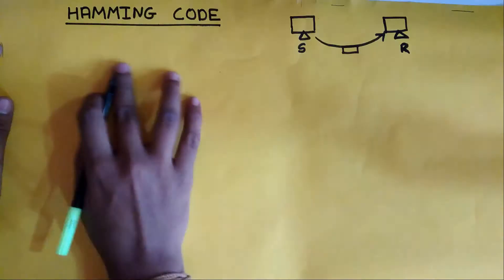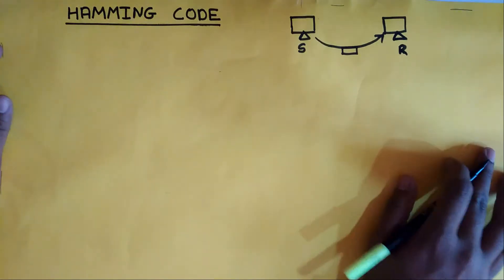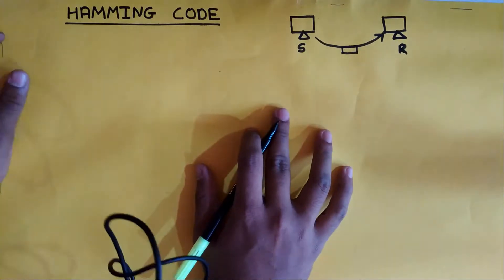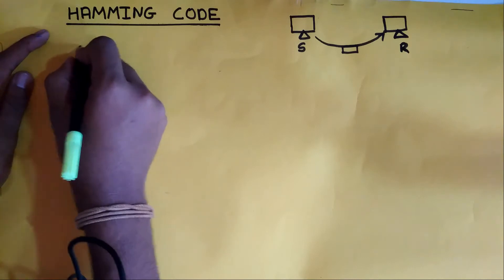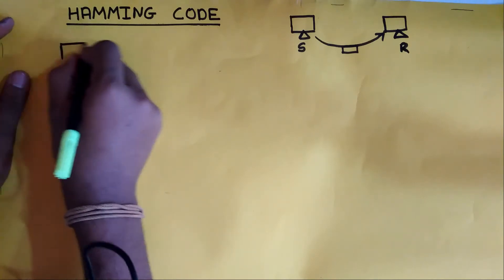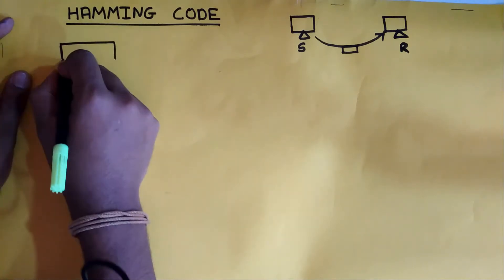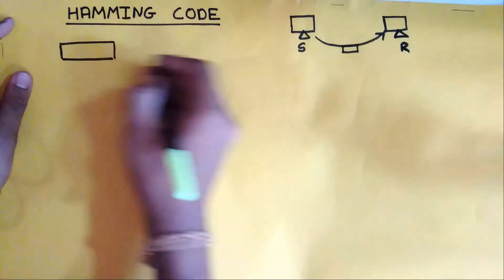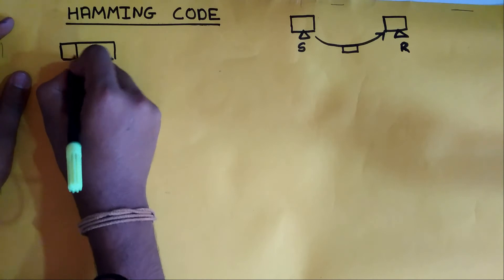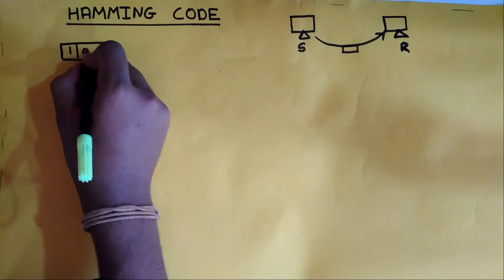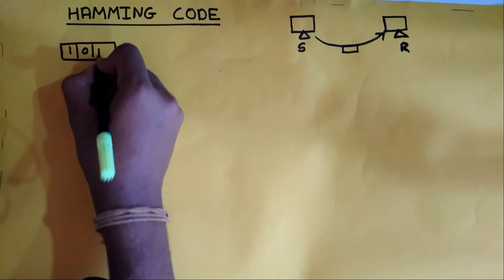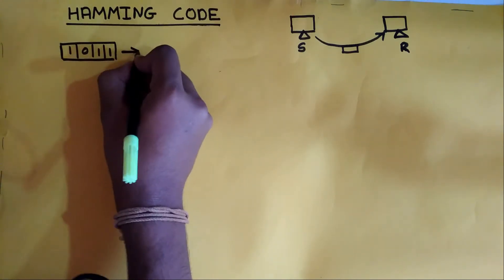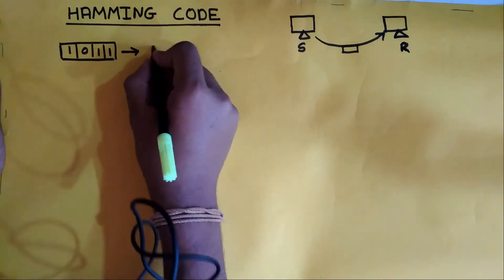Let's just consider the whole working of a Hamming code with respect to an example. Let's consider the 4 bits which the sender wants to send to a receiver: 1, 0, 1, and 1. These bits are known as data bits.